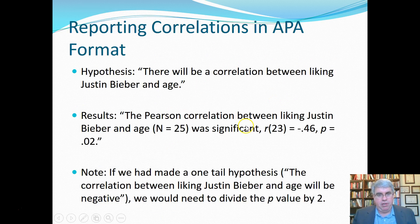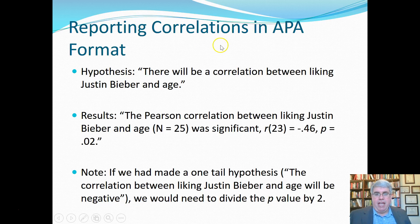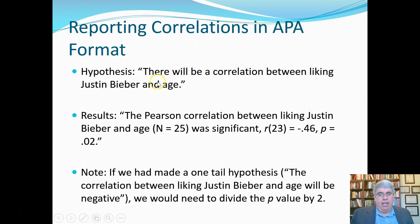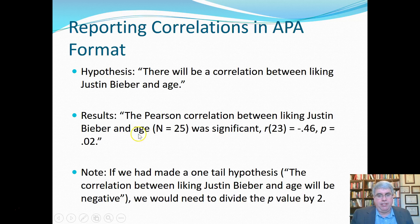Here we've got the output. How do we report these correlations in APA format? The hypothesis will be that there is a correlation between liking Justin Bieber and age. The way we can report this is: the Pearson correlation between liking Justin Bieber and age — here we report the sample size — n equals 25 — was significant.